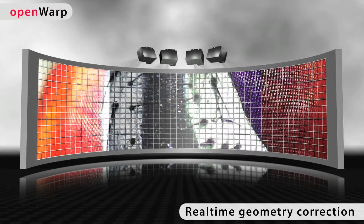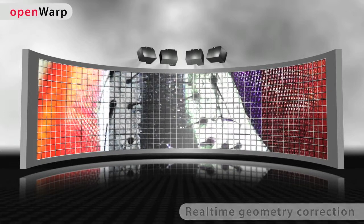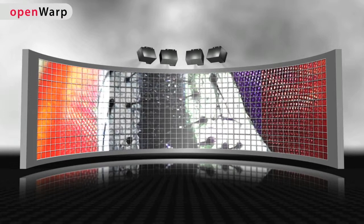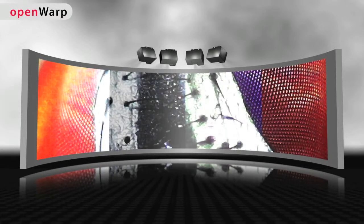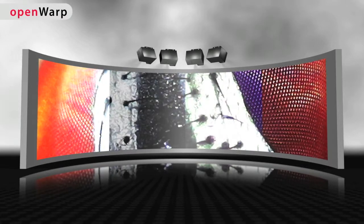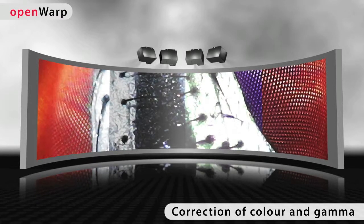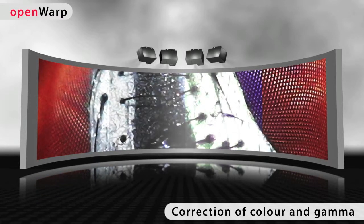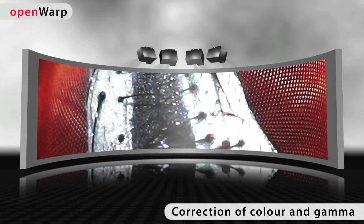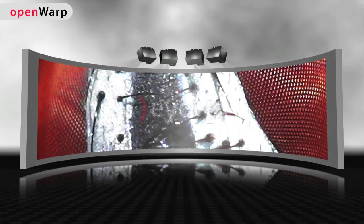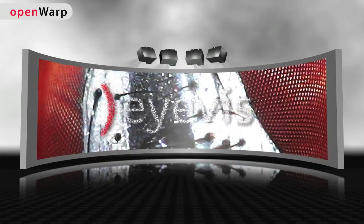On the basis of double polynomials of the fifth degree, our technology affects the adaptation of the geometric data of the individual image signals — and that in real time. For a correct colour presentation, OpenWarp is equipped with extensive options for gamma correction, colour transformation and colour shading. The result is a homogenous, brilliant and geometrically correct image.